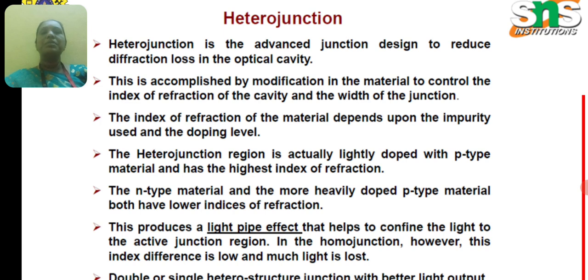The N-type material and the more heavily doped P-type material both have lower indices of refraction. These two types of materials produce a light pipe effect that helps to confine the light to the active region in the homojunction.